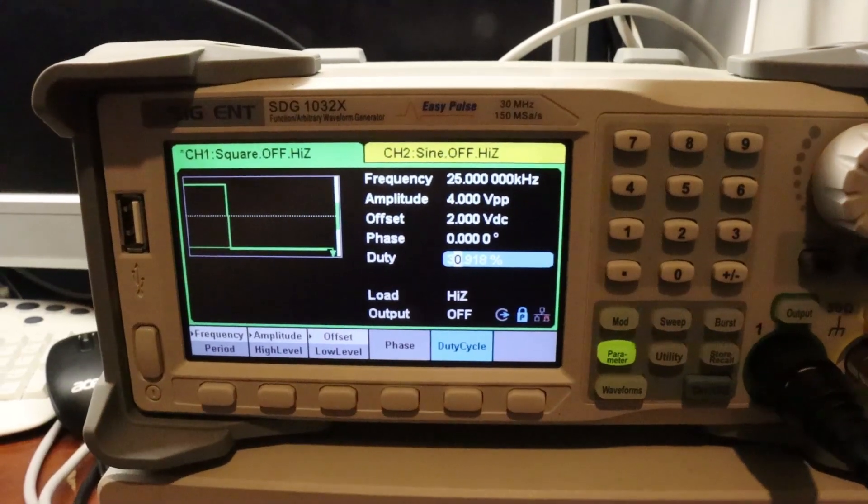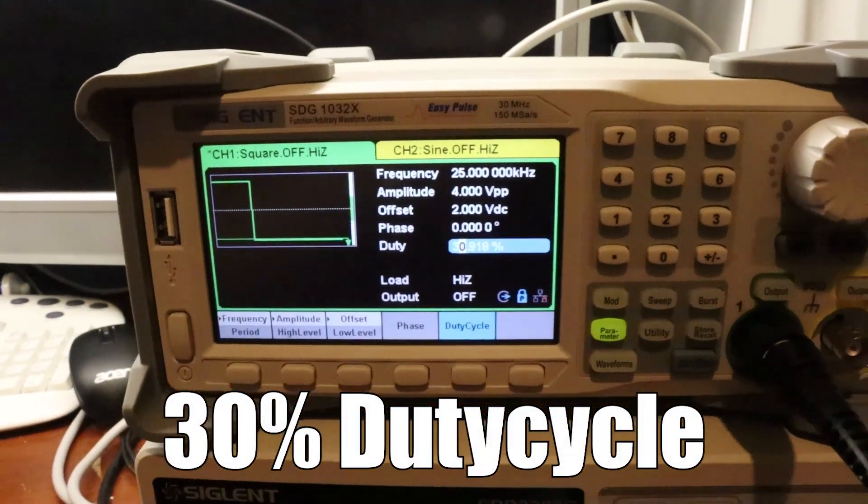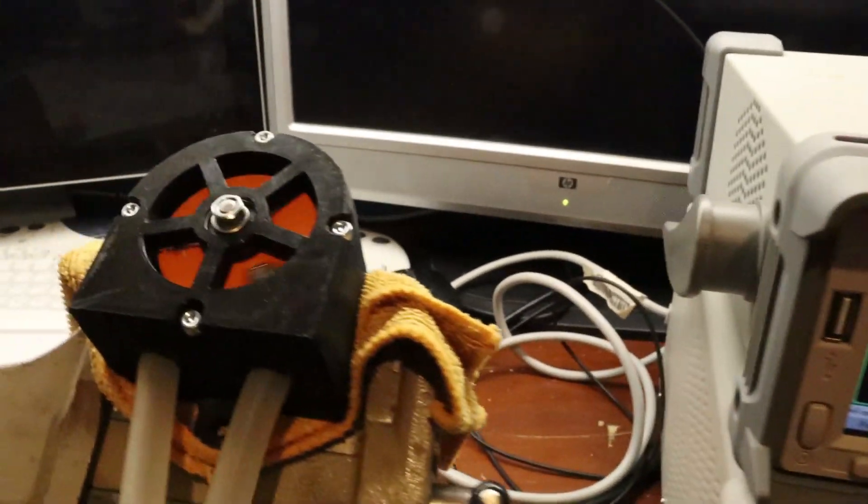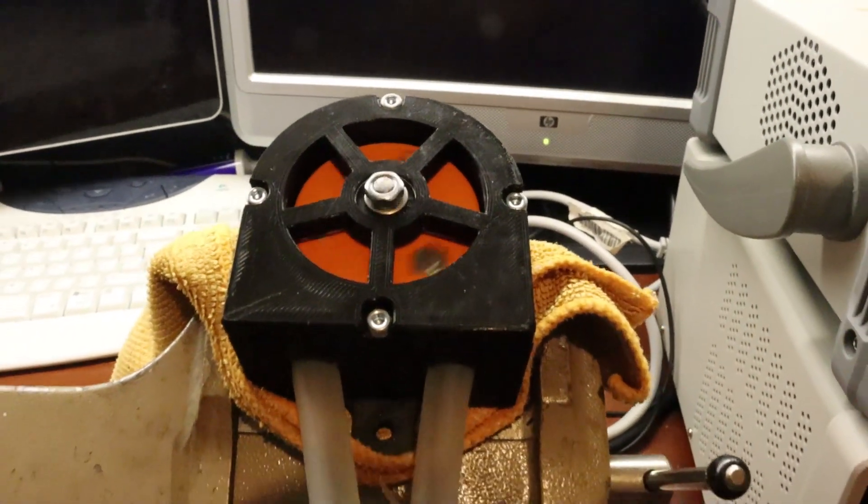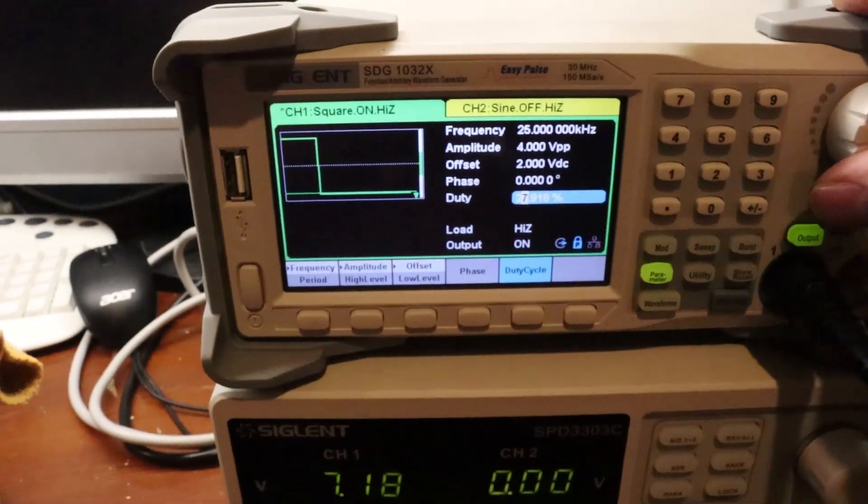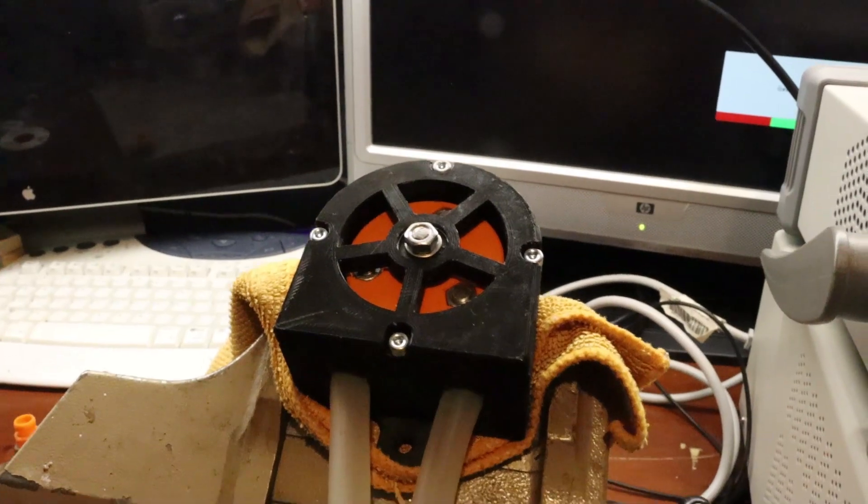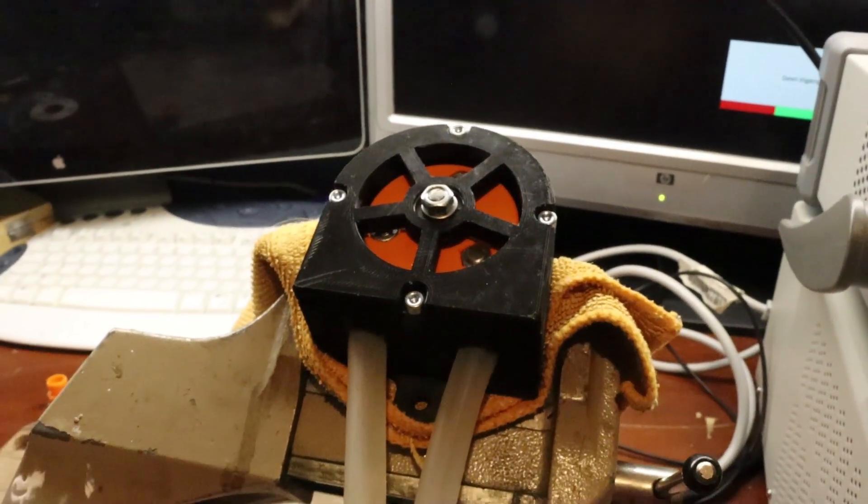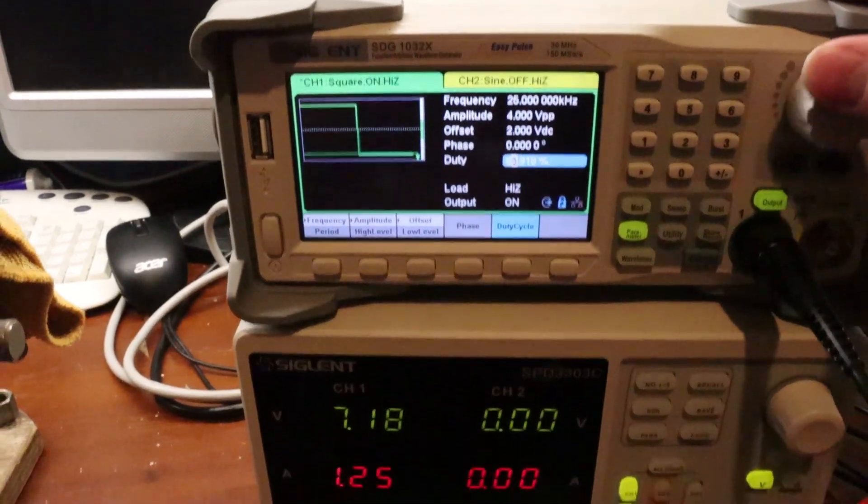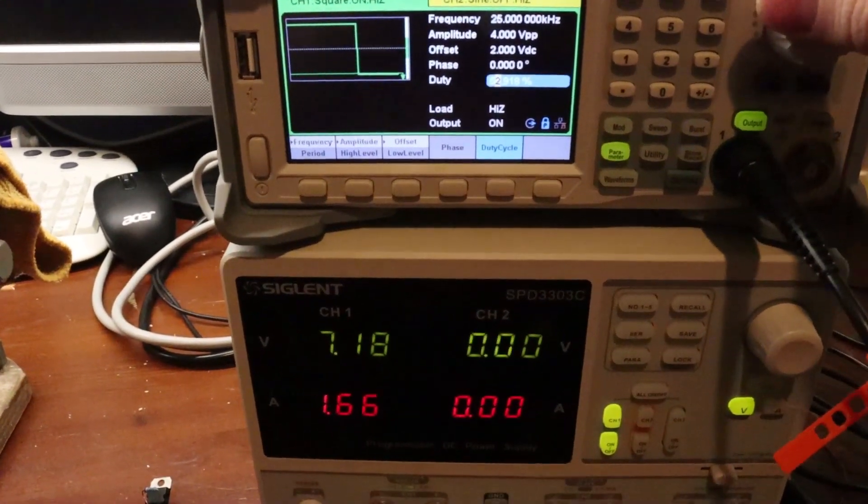As you can see it's 7.2 volts. I'll start the test at around 30% duty cycle at 25 kilohertz. The pump is turning really slowly. If I lower the duty cycle more and more, the pump will stall because there's simply not enough torque to let the motor spin.